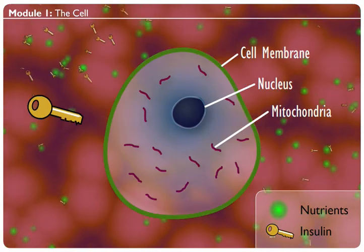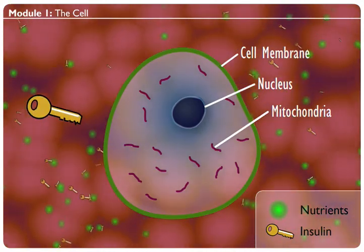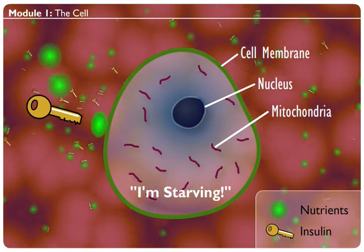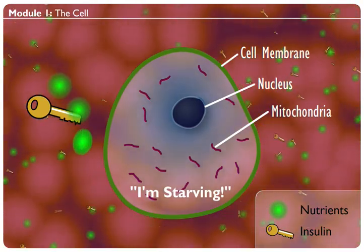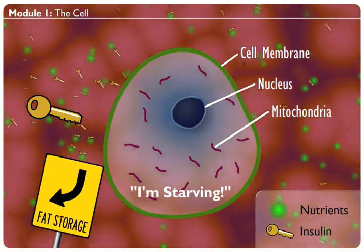When the membrane is hard and the lock is jammed, insulin cannot open the door and the cell starves. In this case, nutrients pass from your body or get stored as fat.